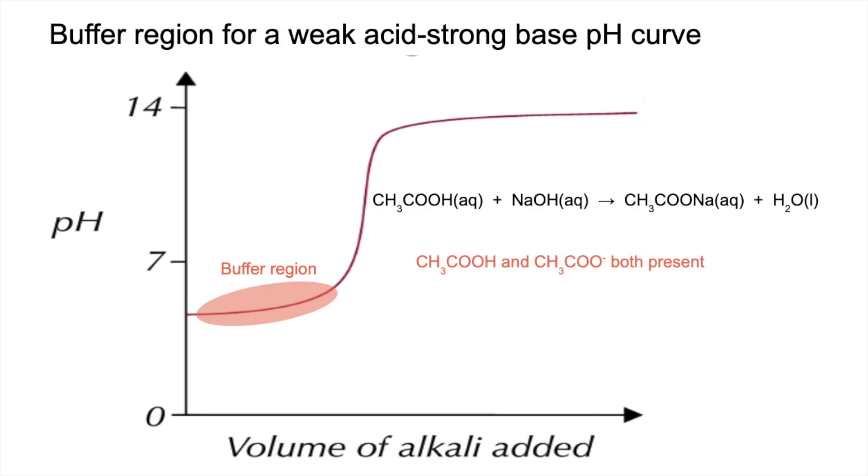Before the ethanoic acid gets completely neutralised, you're going to have both of the key ingredients for a buffer present. You've got a weak acid and the salt of a weak acid. As soon as you've neutralised the weak acid, that's all gone. There's the equation that represents the buffer.